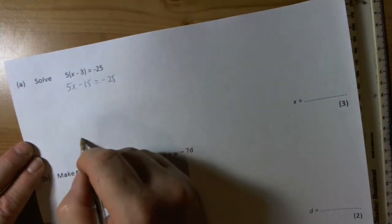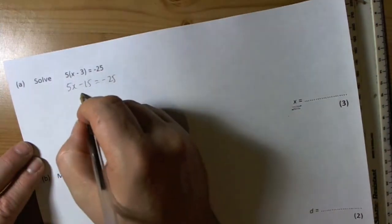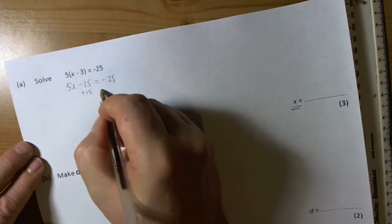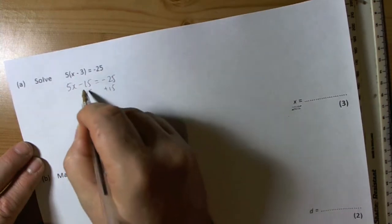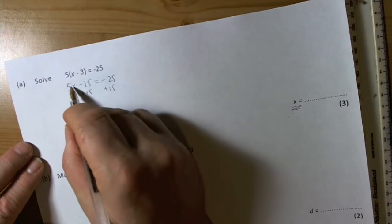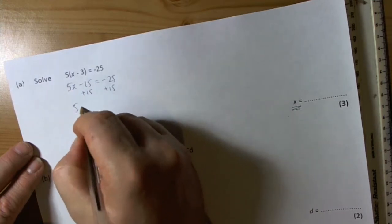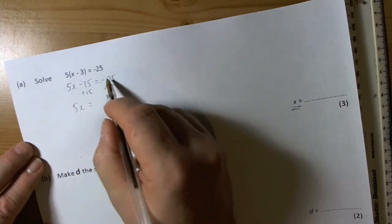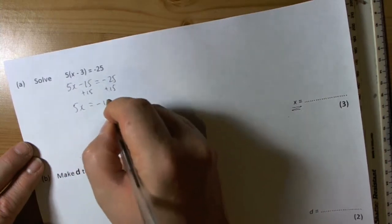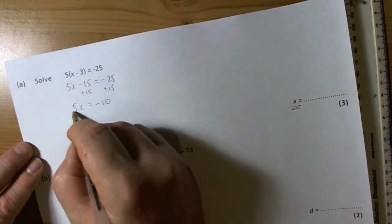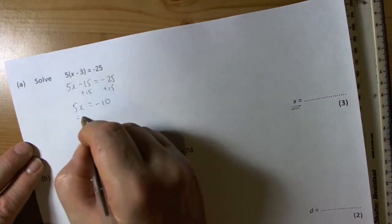Solve means make x the subject, so we want to get down to x equals. You do the opposite operations as we move everything away from x. Take away 15 is not in the term with x, so that gets done first. We add that, so we end up with 5x is going to equal, well, negative 25 plus 15 is negative 10.